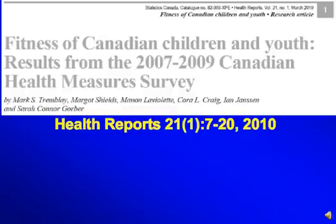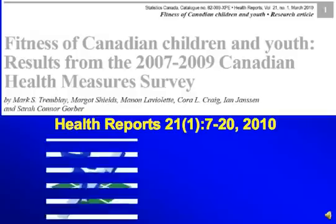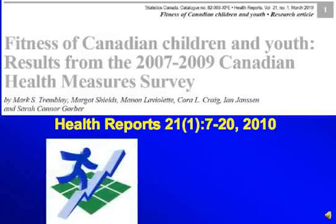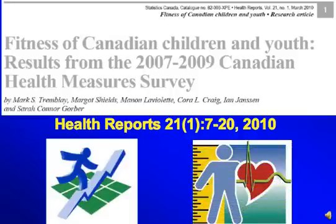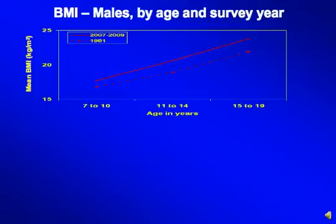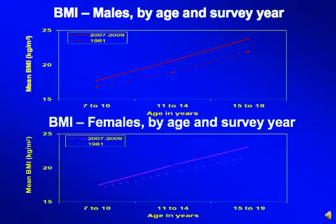Turning to fitness, new data from the Canadian Health Measure Survey from Statistics Canada allowed comparison of the 1981 Canada Fitness Survey with the 2007–2009 Canadian Health Measure Survey. Looking at mean body mass index in boys across age groups 7–10, 11–14, and 15–19 — the hatched line representing 1981 and the solid line representing recent data — there are significant differences in BMI across all age categories, in some cases two full BMI units. The exact same pattern is seen for females.